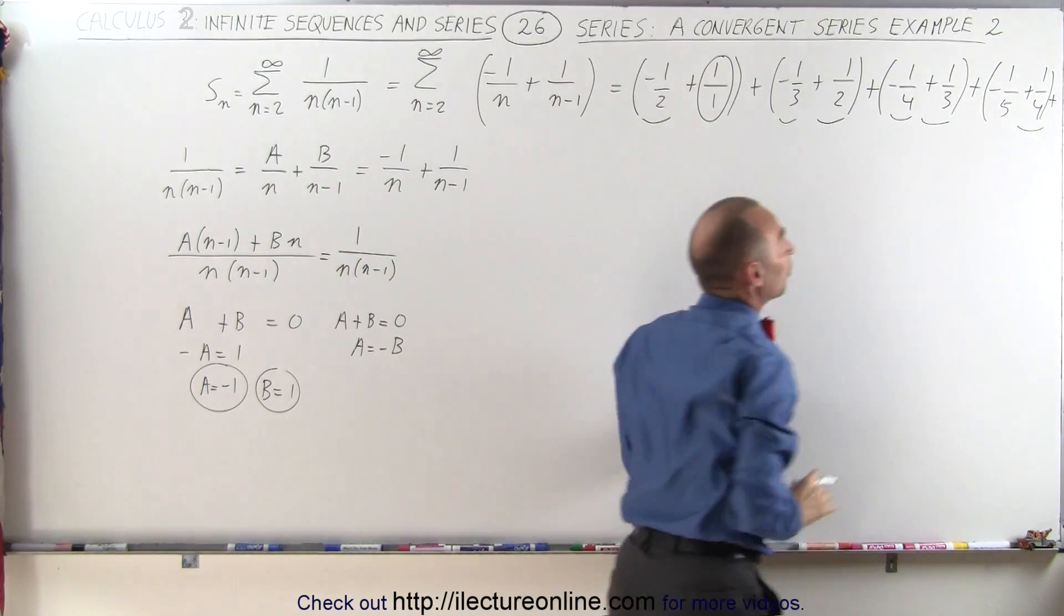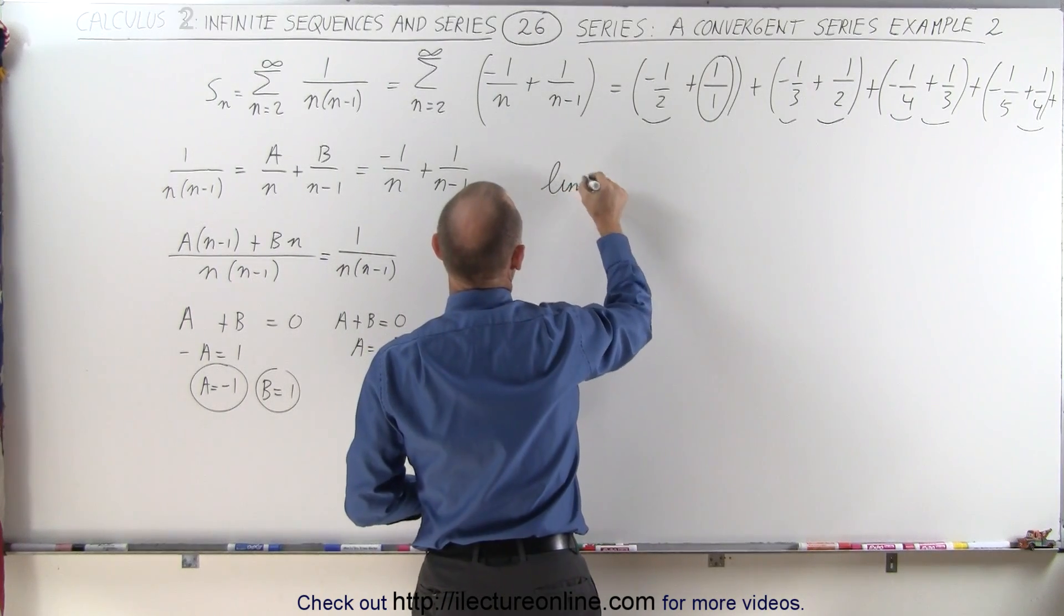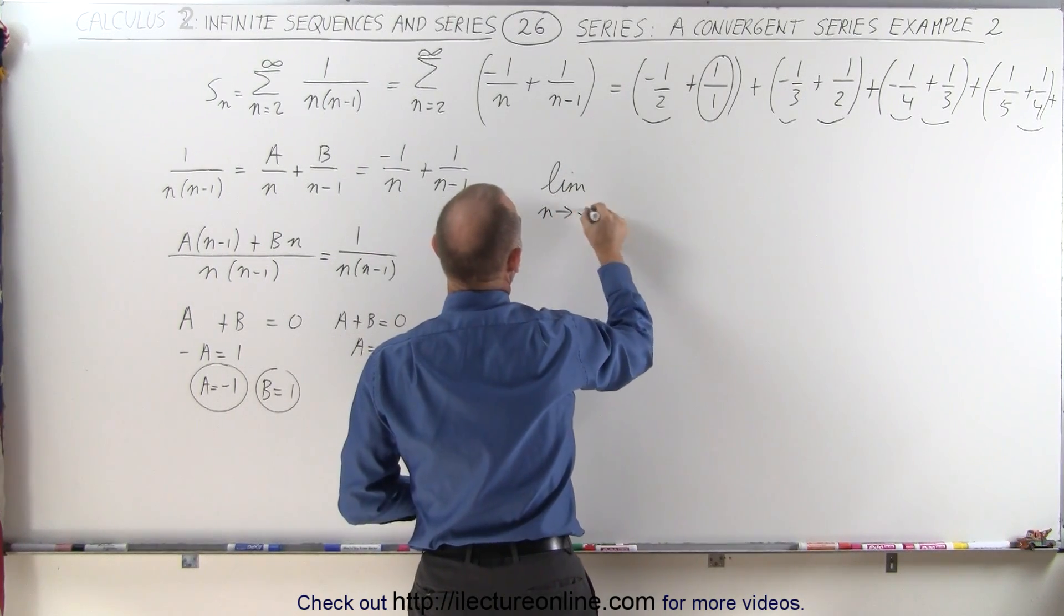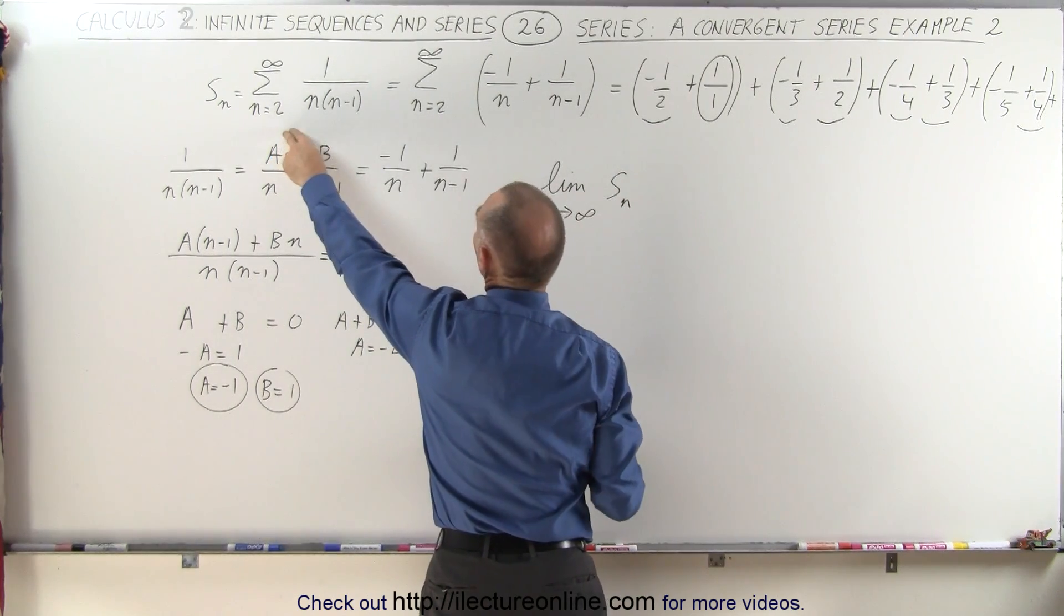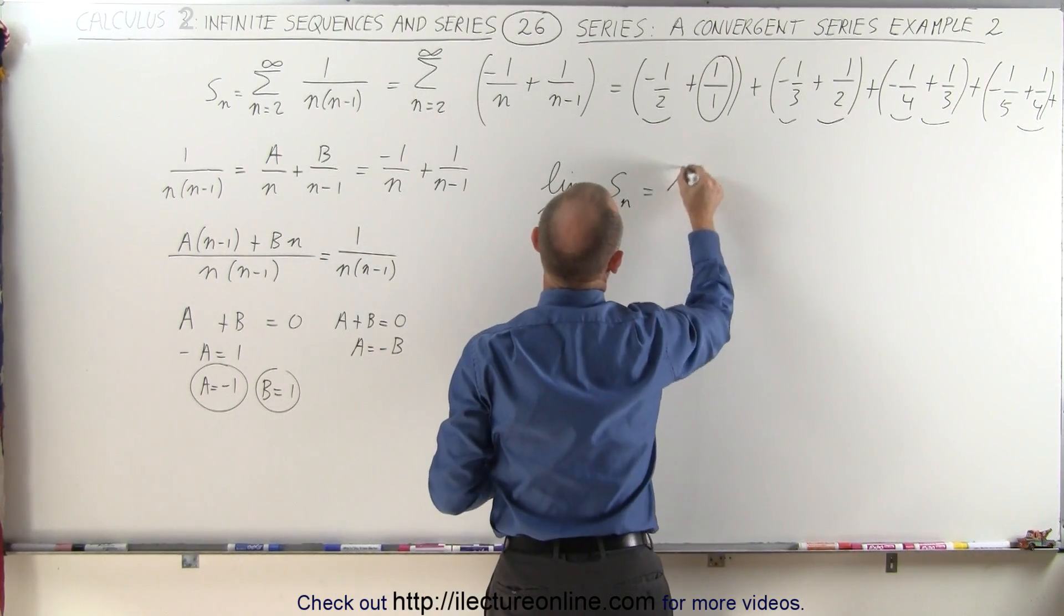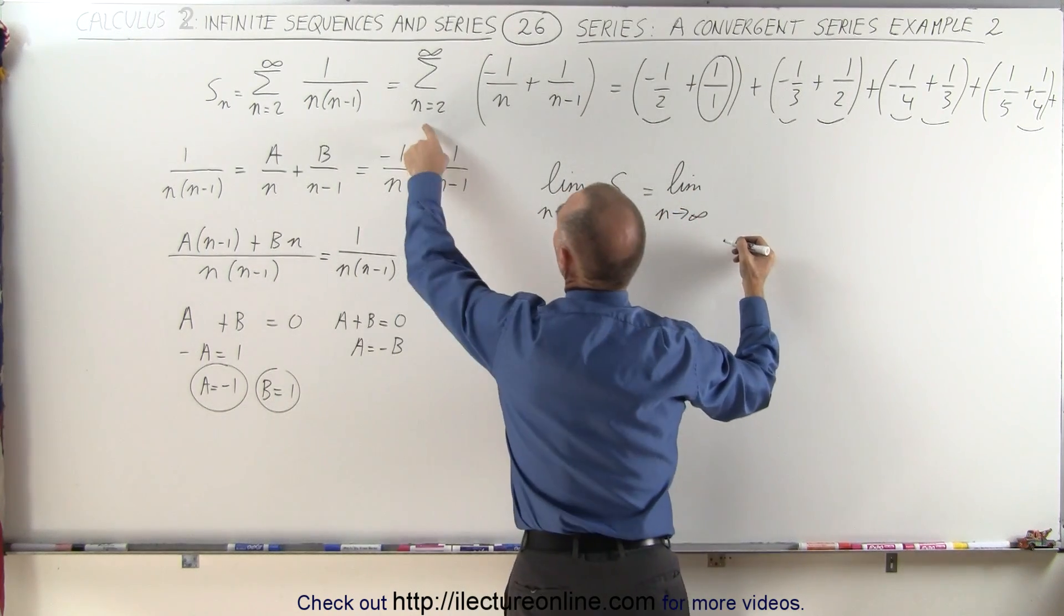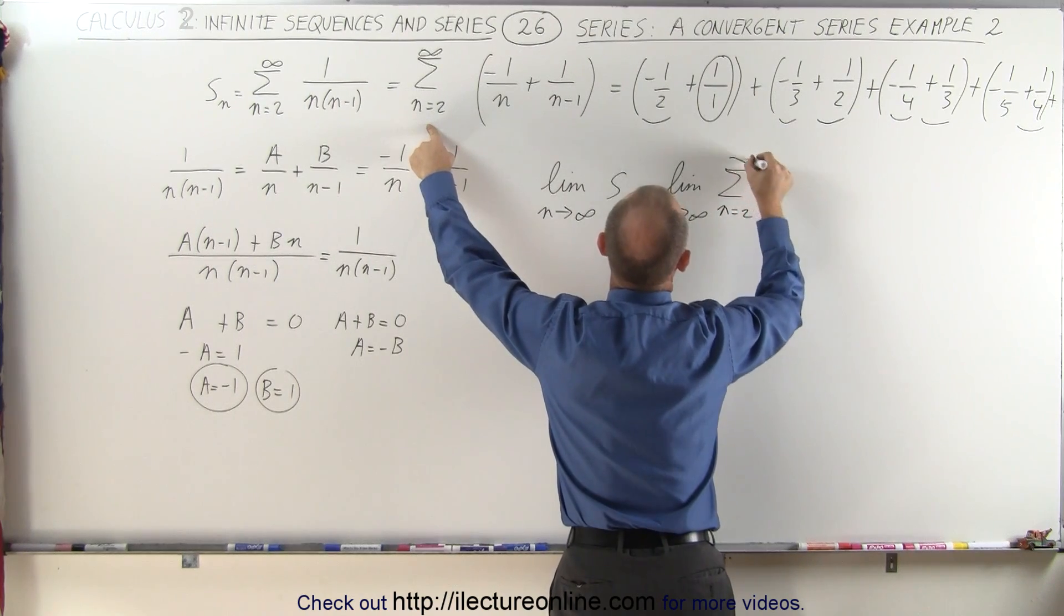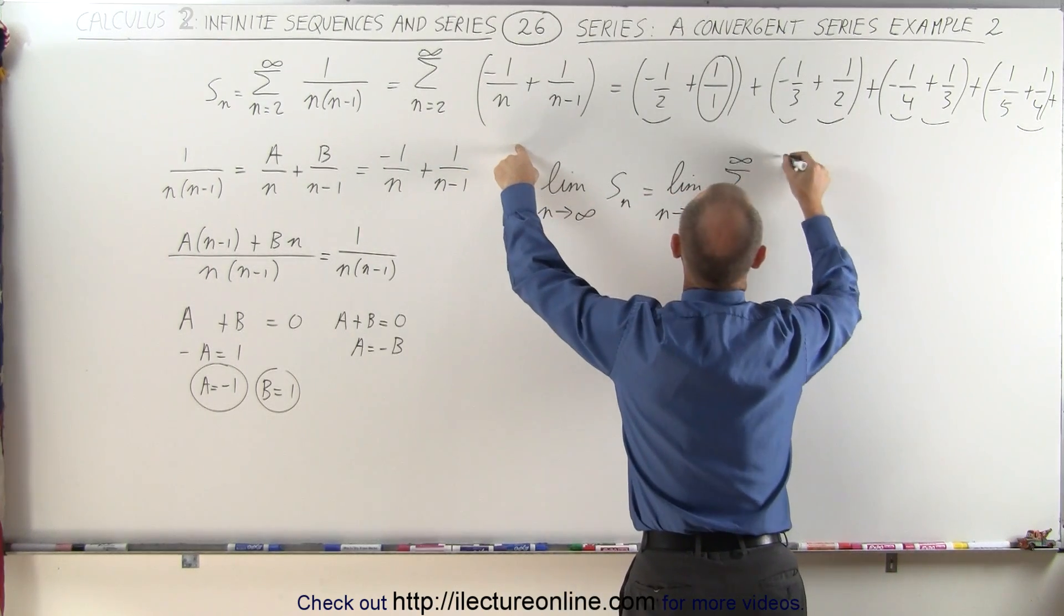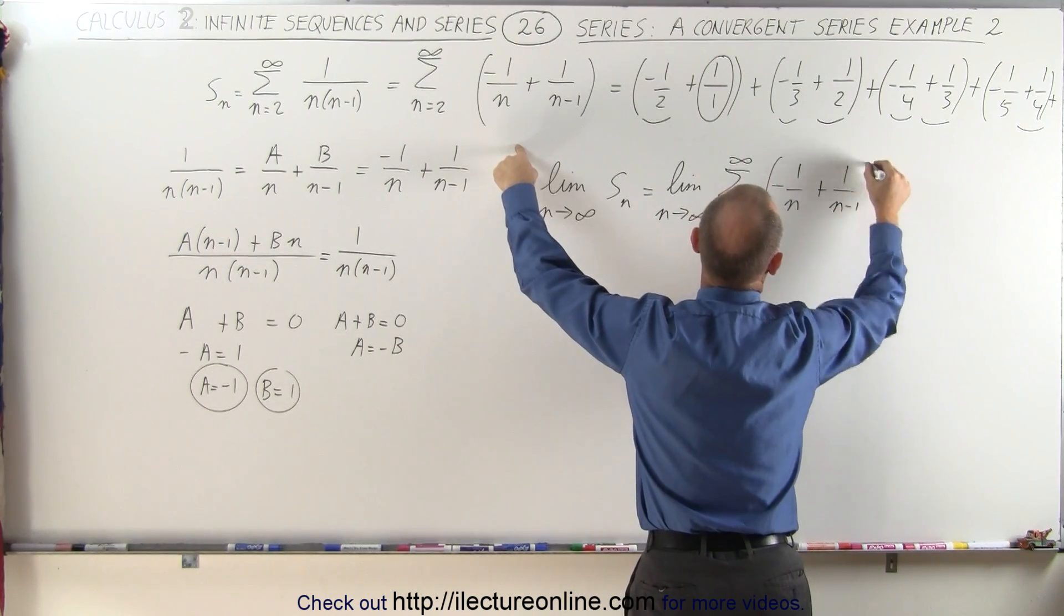So in the limit as n approaches infinity of the infinite series s sub n, this is equal to the limit as n approaches infinity of the sum starting at 2 and going to infinity of minus 1 over n plus 1 over n minus 1.